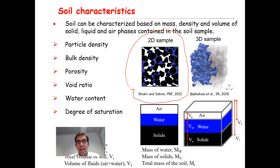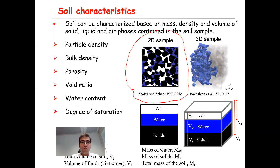Here you see the black color is the sand grain. This picture was captured by synchrotron X-ray tomography, which enabled us to look into the phase distribution in sandy material under a draining process. The black color is the sand grains, the blue color is the liquid phase or water, and the white color is the air phase.